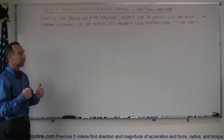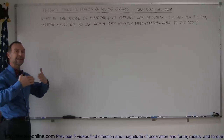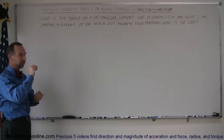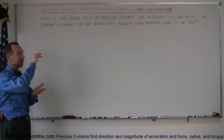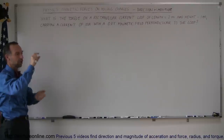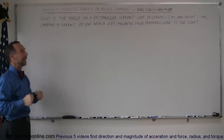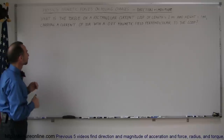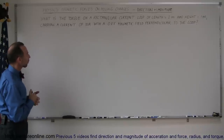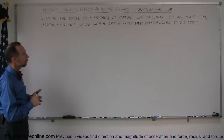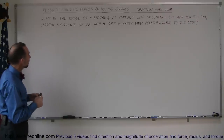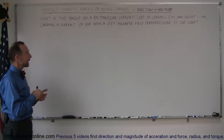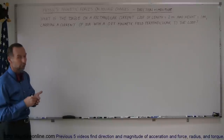What will happen is that this current loop inside a magnetic field will feel a torque. The forces on the wires will cause the magnetic loop to actually be torqued, causing it to rotate around an axis. The problem asks: what is the torque on a rectangular current loop of length 2 meters and height 1 meter, carrying a current of 10 amps, with a 0.8 Tesla magnetic field perpendicular to the loop?